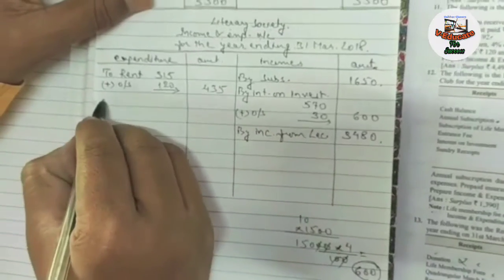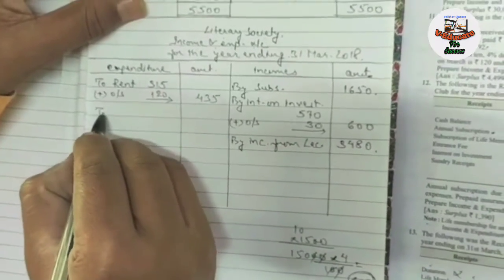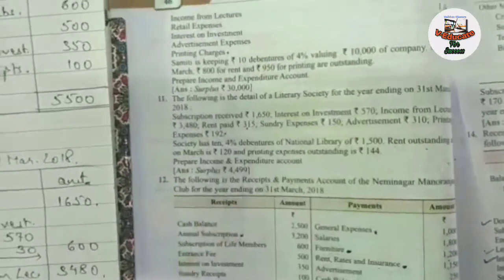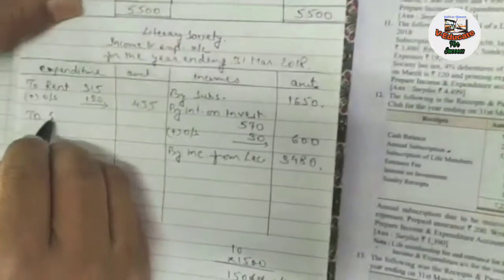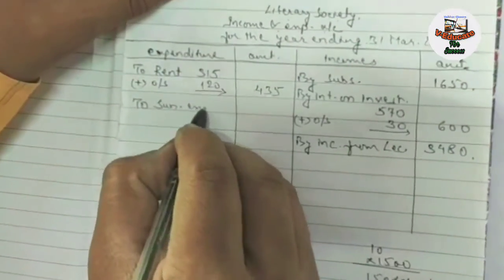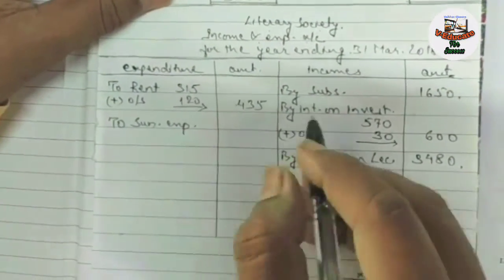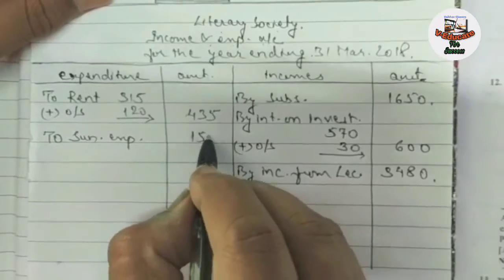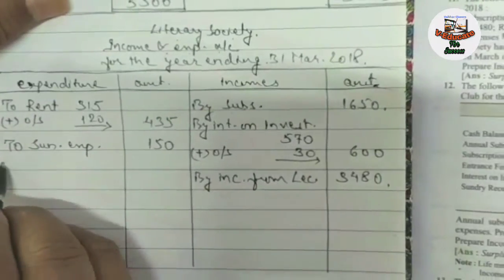Then in the expenditure, sundry expenses are given. No adjustment is there for sundry expenses. The amount is ₹150.